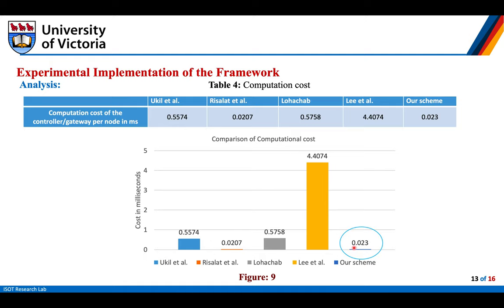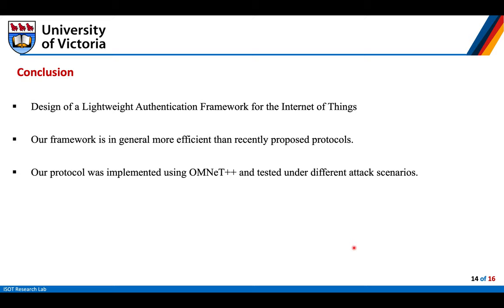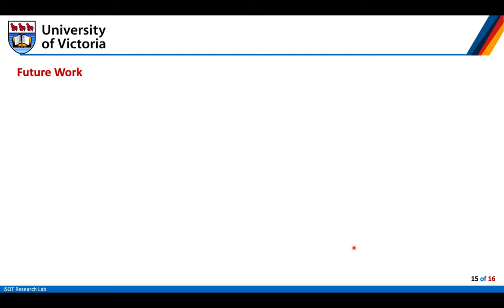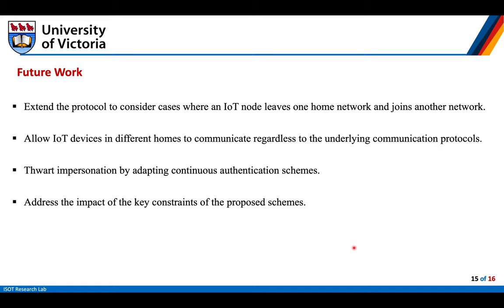To sum up, we have designed a lightweight authentication framework for the Internet of Things, and our framework is in general more efficient than recently proposed protocols. Our protocol was implemented using OMNET++ and tested under different attack scenarios. For future work, we will extend the protocol to consider cases where an IoT node leaves one home network and joins another, allow IoT devices in different homes to communicate regardless of the underlying communication protocol, address impersonation by adapting continuous authentication schemes, and try to address the impact of key constraints of the proposed schemes.